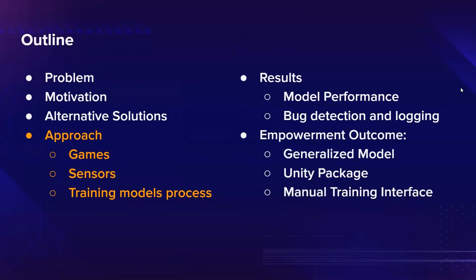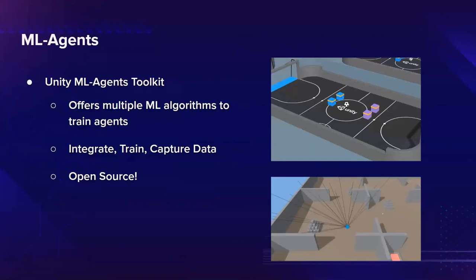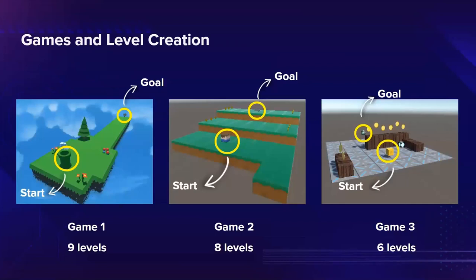Next, we want to address our approach for developing our product. We use the ML Agents framework as our main structure, which is an open source framework developed by Unity and can be integrated into the Unity game engine. It's open source so we can make our own changes, which we did. It offers machine learning algorithms like PPO and SAC, and the purpose is that you would integrate it, train the model on it, and be able to capture data and output from it.